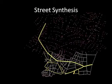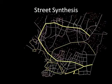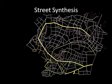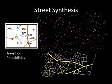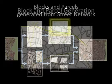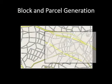Street expansion performs a controlled random walk through the attributed intersection points. The transition probability from a current point to a next point is calculated from its attributes. After street generation, blocks are extracted and parcels are created inside each block.